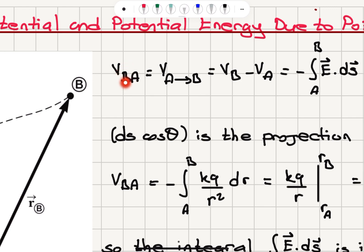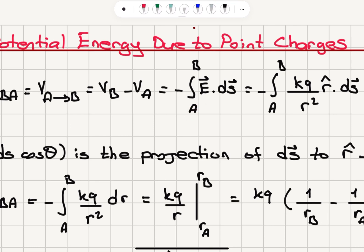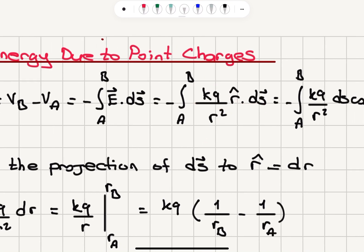So once again, this is the potential of B with respect to A, meaning we go from point A to point B. It is V_B minus V_A, which equals minus the integral going from point A to point B of the electric field dot product with ds — our path integral. The electric field due to a point charge Q is Kq over R² in the R-hat direction, so this becomes the integral of Kq over R² times R-hat dot ds.